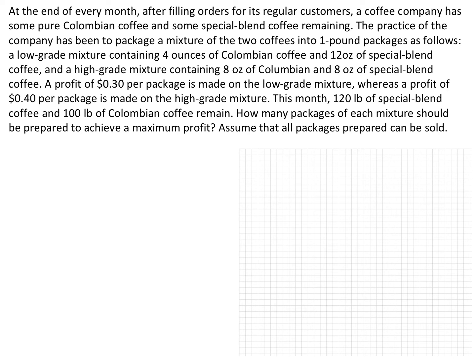At the end of every month, after filling orders for its regular customers, a coffee company has some pure Colombian coffee and some special blend coffee remaining. They package a mixture into one-pound packages: a low-grade mixture containing 4 ounces of Colombian and 12 ounces of special blend, and a high-grade mixture of 8 ounces each. Profit is $0.30 per low-grade package and $0.40 per high-grade package. This month, 120 pounds of special blend and 100 pounds of Colombian remain. How many packages of each should be sold to maximize profit?